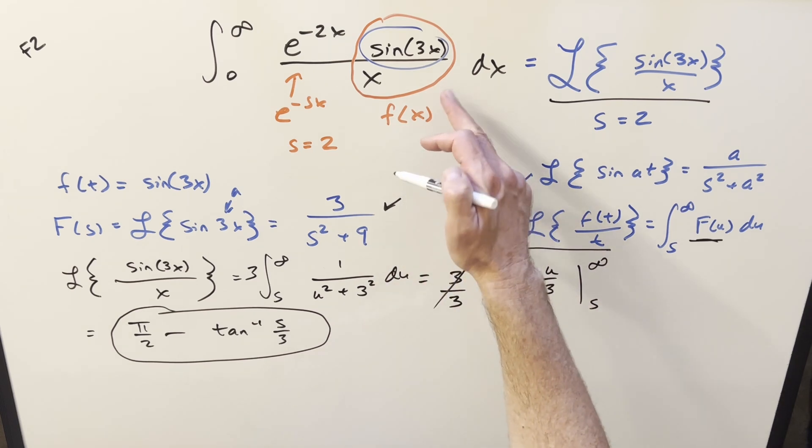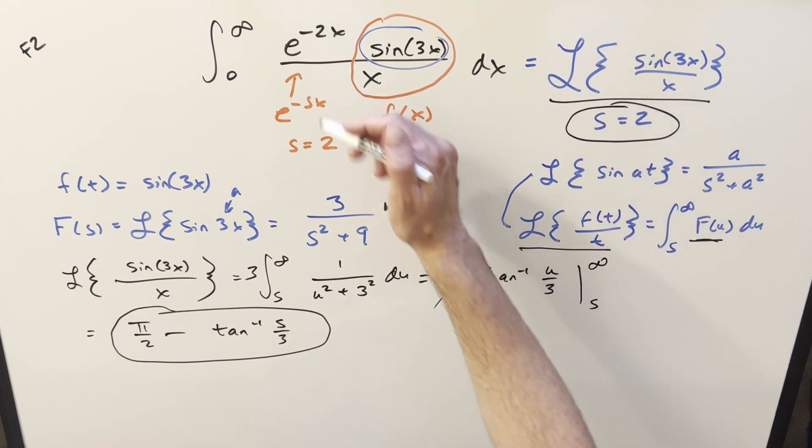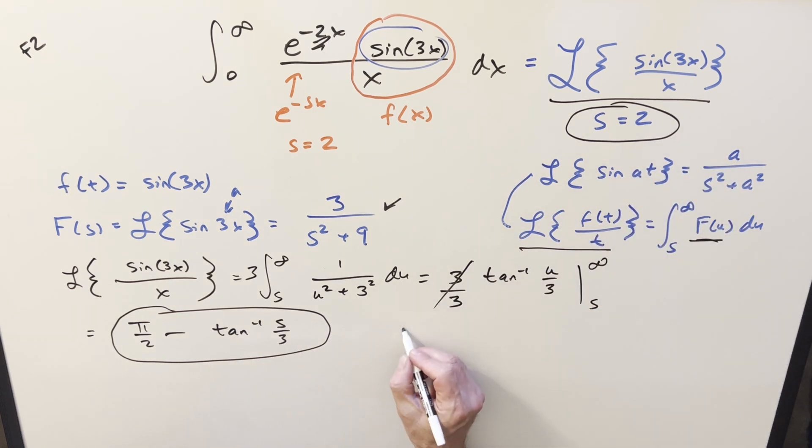But we want to get the exact solution for this integral. So remember we had this condition that we're saying s is going to be equal to 2. So we'll just take the 2 and plug it back in here. And then this is going to become pi over 2 minus arctan of 2 thirds.